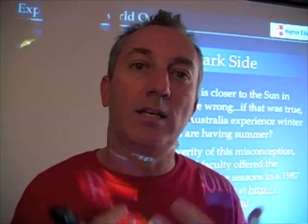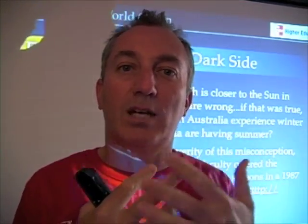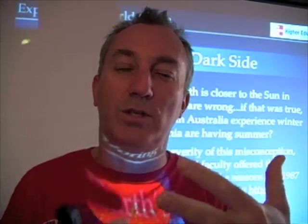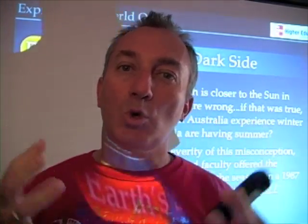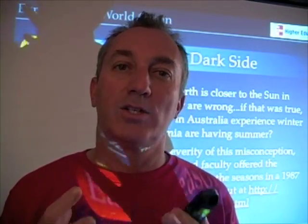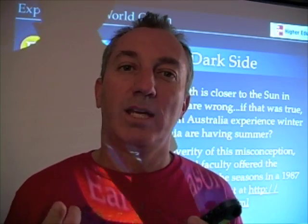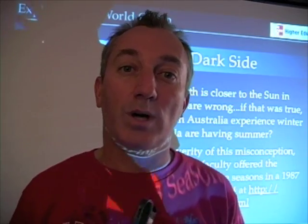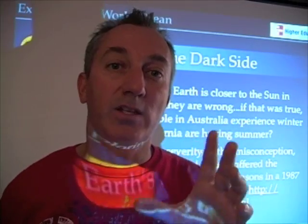That light takes eight minutes to reach us, and then takes some few fractions of seconds to go from the exosphere down to the surface of the Earth. It's the absorbing of that radiation by Earth's surface that is really what's causing the heat. So now that we have an understanding of where heat comes from, let's think about the seasons.